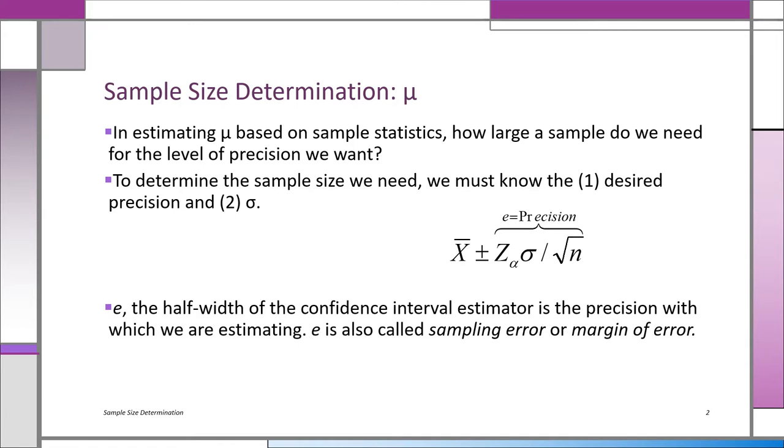We know z because we know what confidence level we want. Sigma would have to be known for this exercise. So either it is known, or we have some really good guesses based on previous studies. e is known. That's the precision or the margin of error or the half-width of the interval. We're calling it e. So the only thing left is to solve for n, and that's just algebra. And x-bar doesn't count because that's at the center and doesn't go into precision at all.